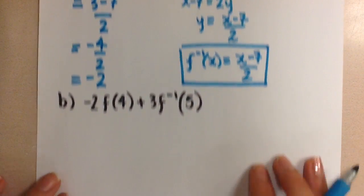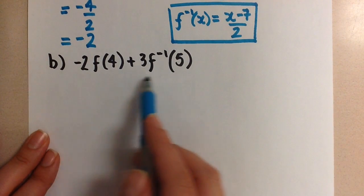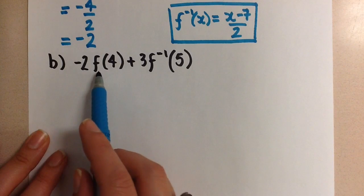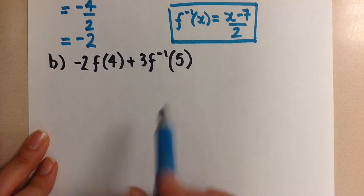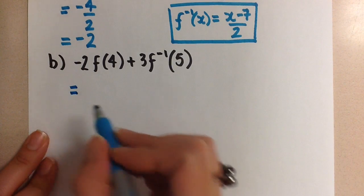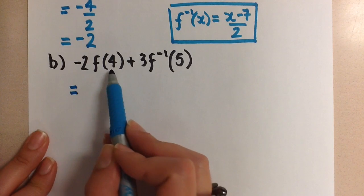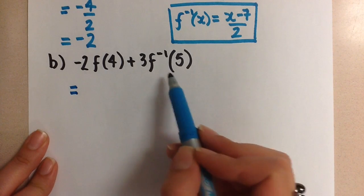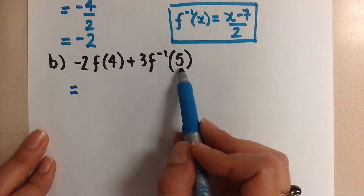Now let's look at this more complicated expression. We're going to evaluate this. We need to use the original function and the inverse of the function here. So when we're doing this, just be very careful when you're subbing in values to make sure that we use the original equation here with 4 subbed in for x, and we use the inverse equation with 5 subbed in for x there.